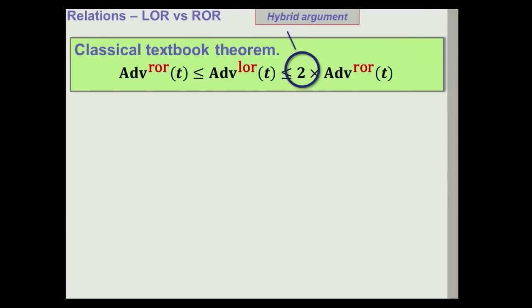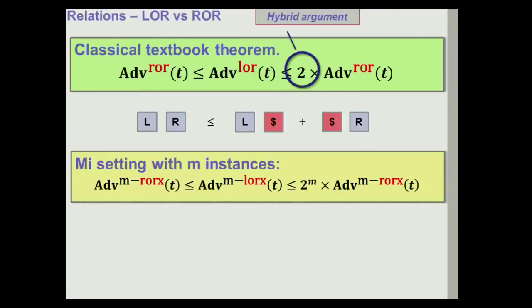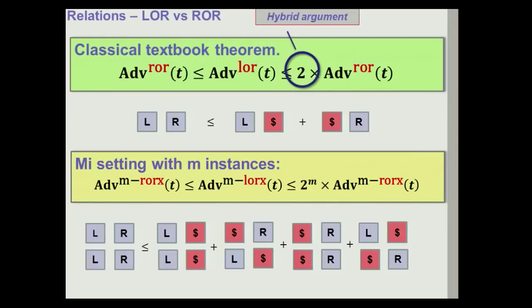And the reason they are within a factor two of each other is because the proof goes via what is known as a hybrid argument, where we upper bound the left or right advantage in terms of twice the real or random advantage. This is a traditional crypto 101 exercise. But what can we do if we now move to the multi-instance setting? Can we do something similar and relate the multi-instance versions of real or random and left or right security? And it turns out that here things are much trickier. We can do that, but it's not trivial to extend the hybrid argument at all. In fact it's quite involved. And in particular the factor two that we have in the single-instance setting is going to become two to the M and is going to be increasing exponentially. And this is because we have to consider way more hybrids. And one will think we can cheat and optimize this. But it turns out that this bound is actually tight and we can't do any better. It's fine because in most cases this factor two to the M, which looks huge, won't be that huge because the advantages involved will be very small. But this shows how things are actually subtle when we move to the multi-instance scenario.